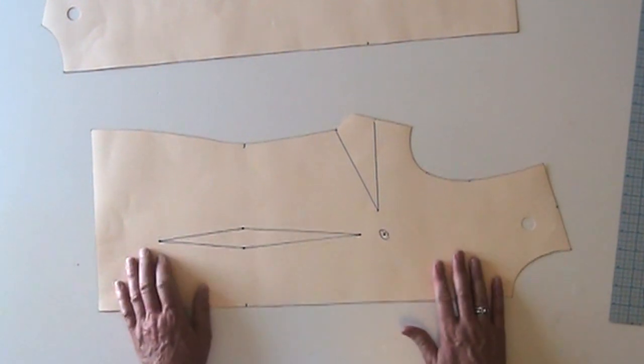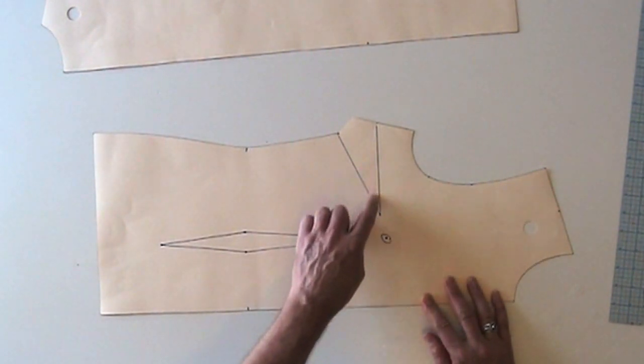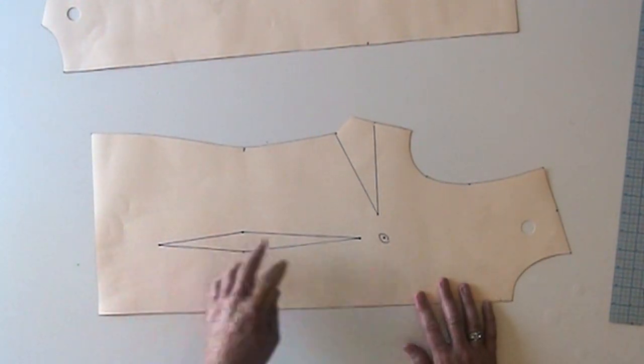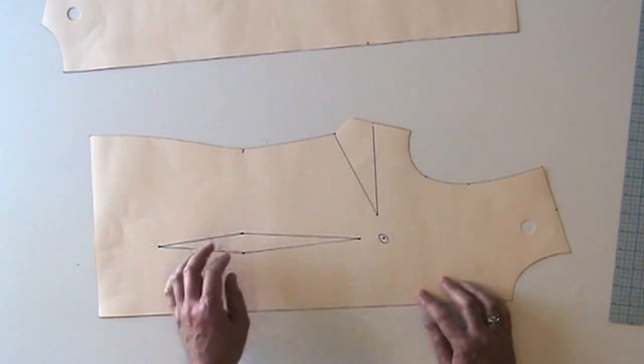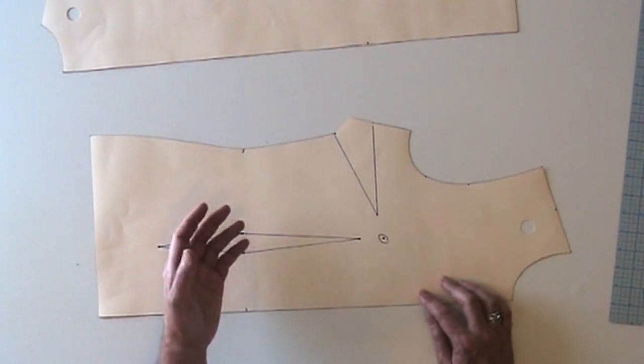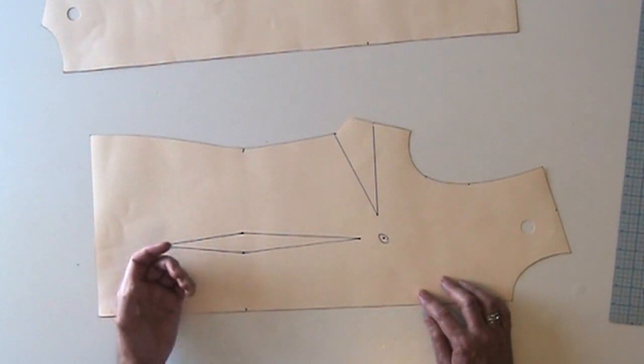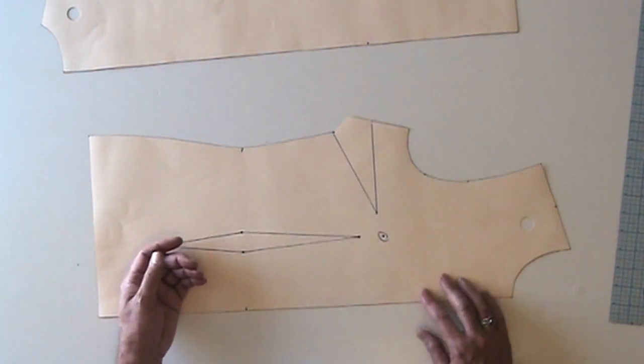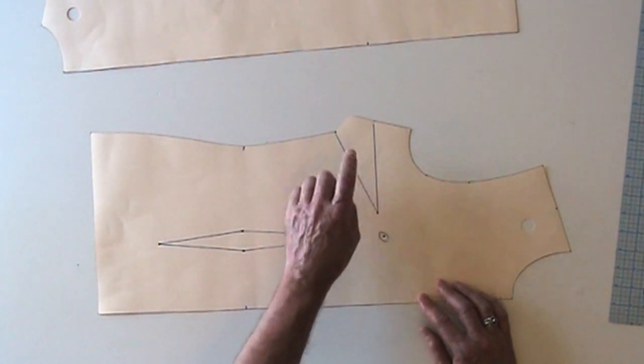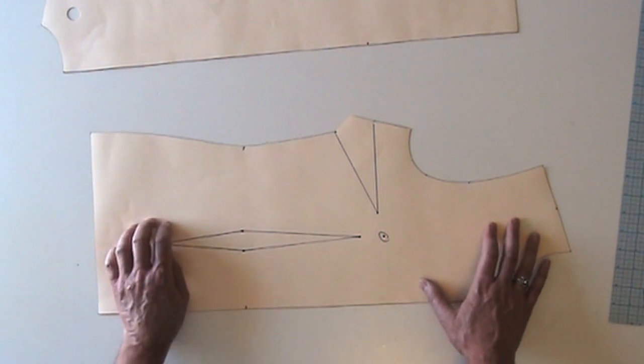The first and perhaps most important one is to always start with a block or sloper that contains a bust dart. That's important because you're using the bust dart as part of your princess seam. And if you use a block like the no-dart block we demonstrated, then you're going to be putting a seam in it that looks like a princess seam, but it's not a true princess seam. It won't have the fit or the advantages of a real princess seam. So by all means, start with a block that has a dart like this fitted blouse block that we created earlier.